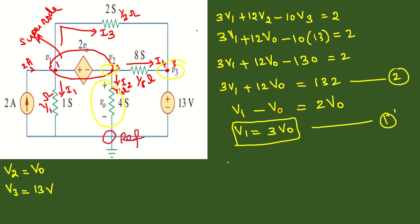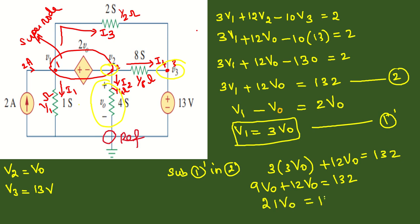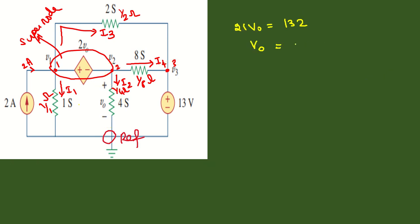V1 equals 3V0 can be substituted in the second equation. So we get 3 times 3V0 plus 12V0 equals 132, which gives 9V0 plus 12V0 equals 132. Thus 21V0 equals 132, so V0 equals 132 divided by 21, which equals 6.285 volts.